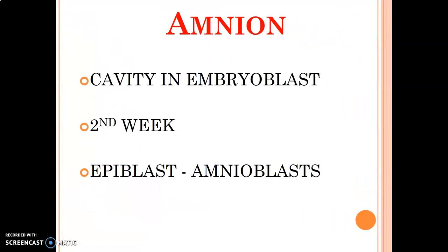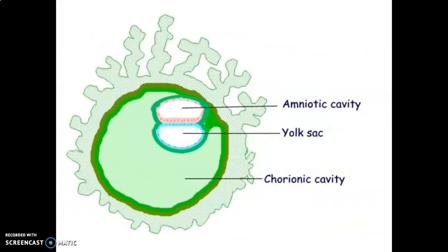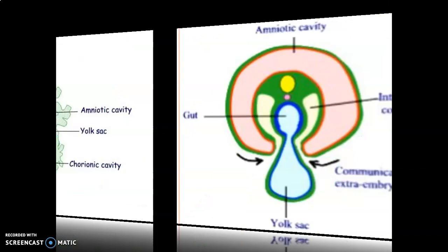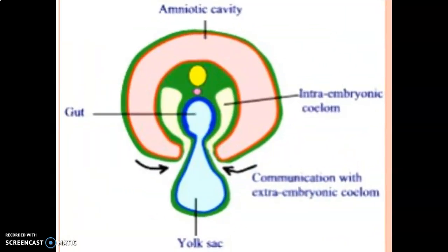We start with the amnion. The amnion forms a cavity in the embryoblast — this develops in the second week. It is the epiblastic cells that form the amnioblast cells lining the amniotic cavity. The amniotic cavity is lined by epiblasts called amnioblasts, and this cavity is filled with amniotic fluid.